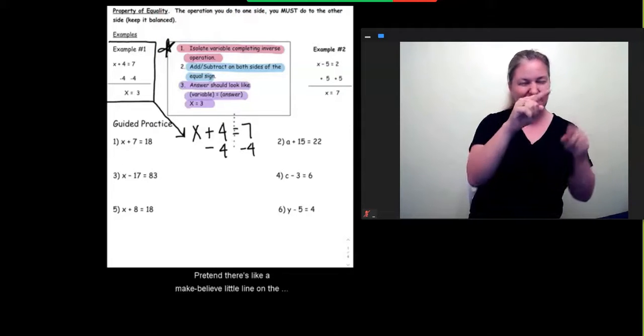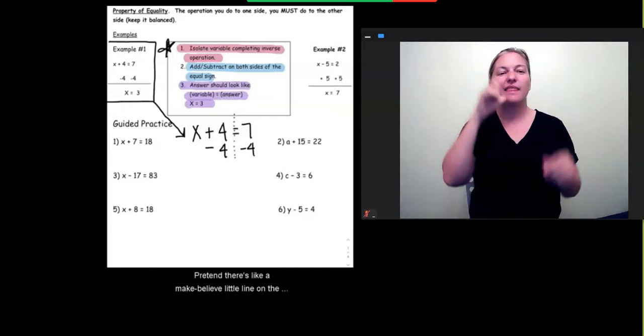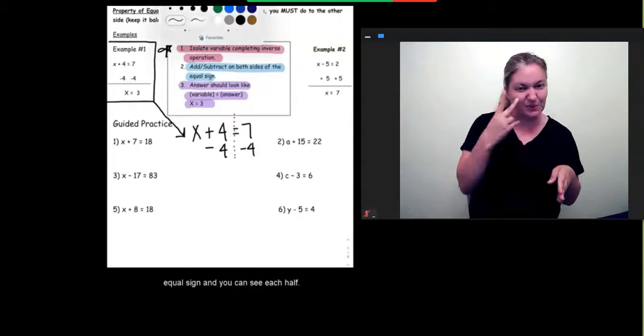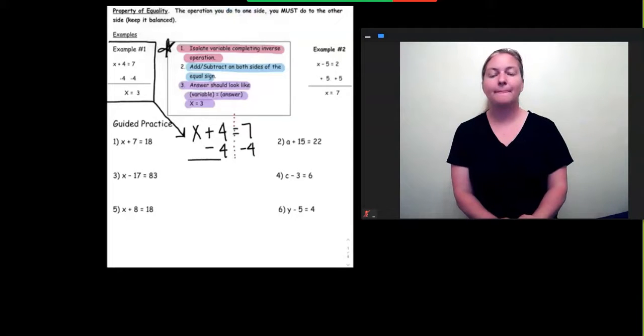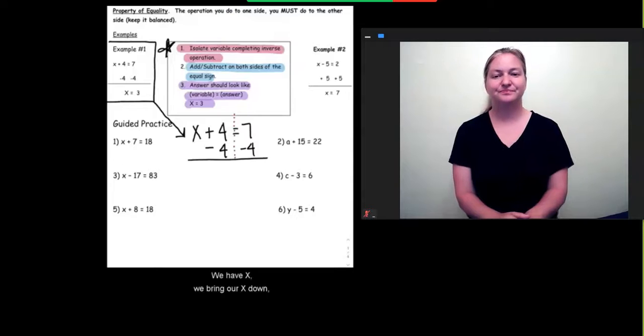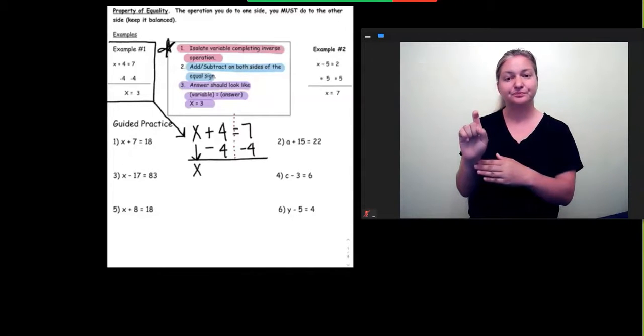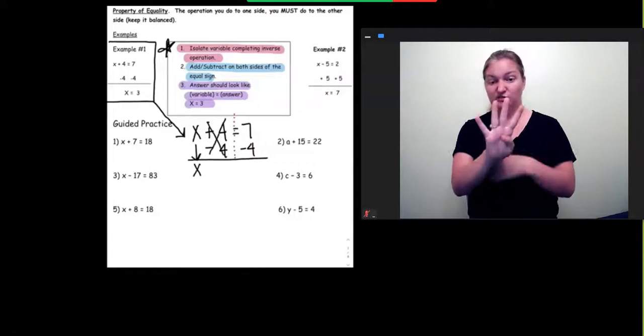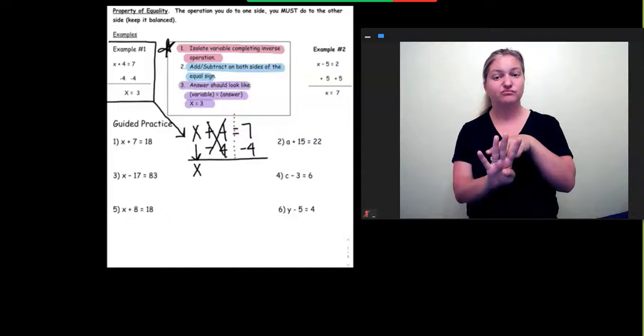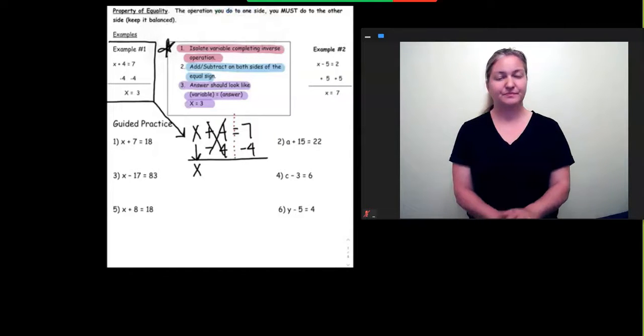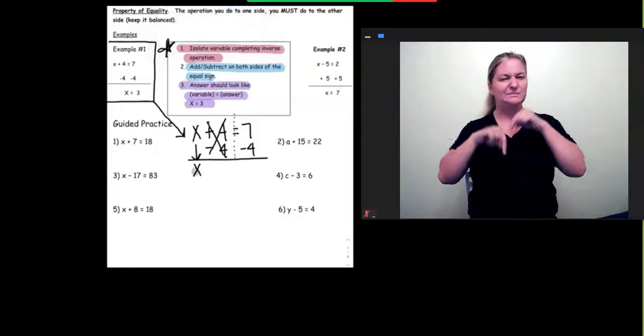Pretend there's like a make-believe little line on the equal sign, and you can see each half. And then we solve. We have x. We bring our x down. Then our 4s are going to cancel each other out.